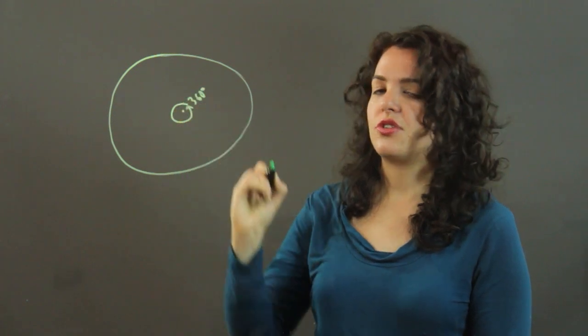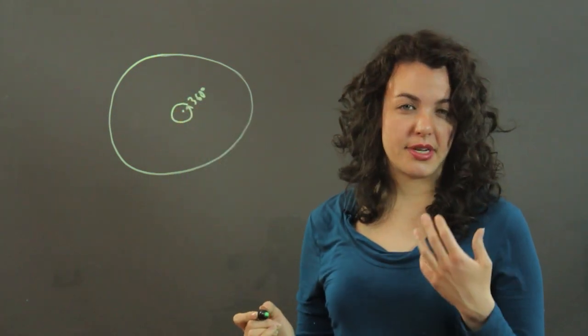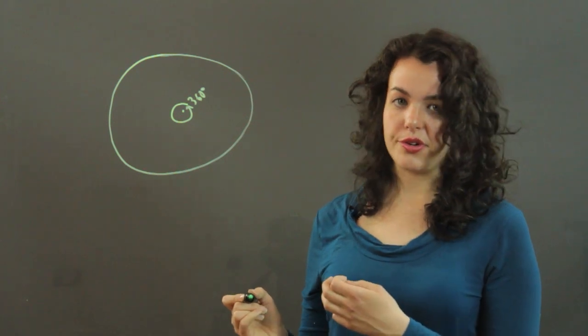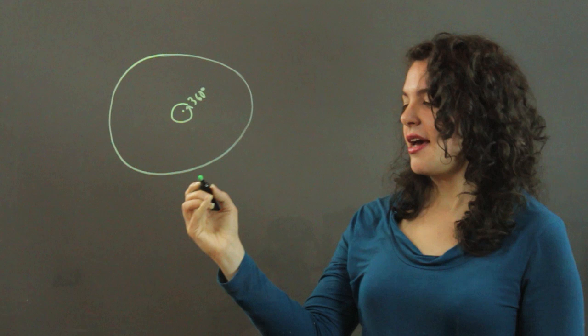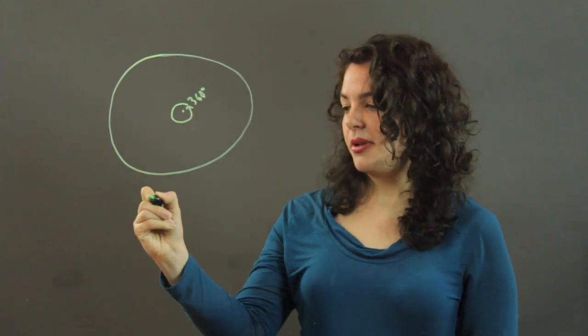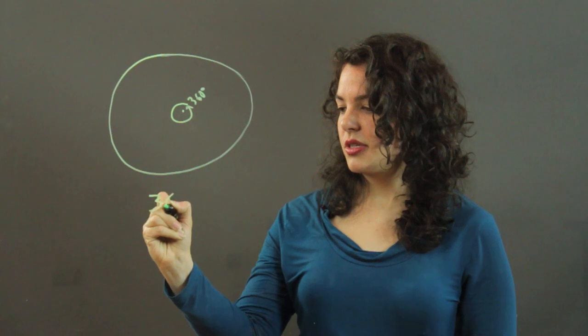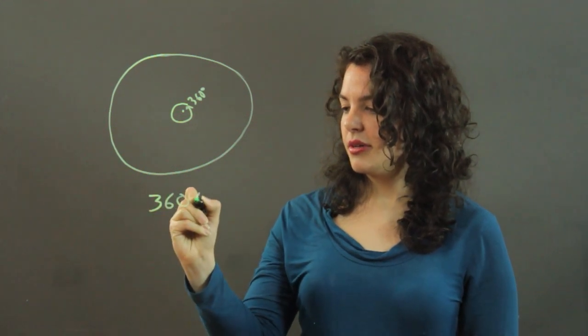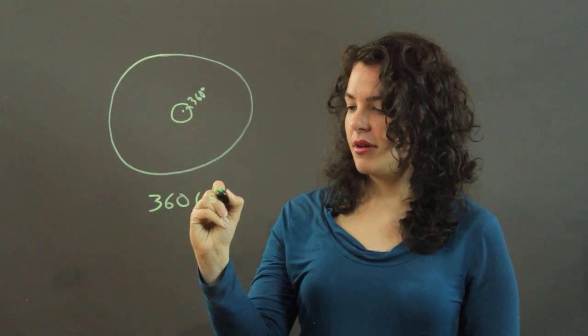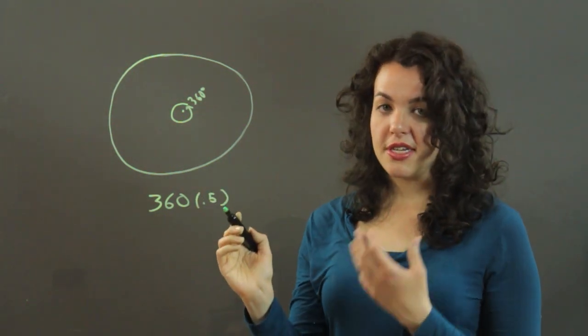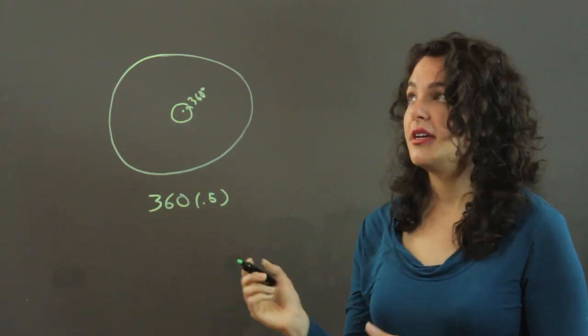Now, a circle has an internal angle of 360 degrees, so you basically need 50% of 360 degrees. And you calculate that by multiplying 360 degrees by 0.5. 0.5 is the decimal form of 50%.